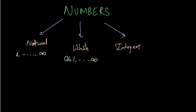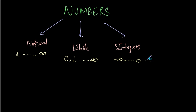Whole numbers are 0 to infinity. When you have positive numbers and negative numbers, you have integers. Integers come along from negative infinity till 0 and go on till positive infinity. So, integers consist of all natural numbers and all whole numbers.